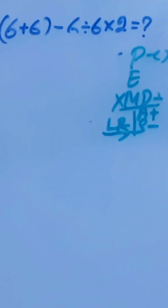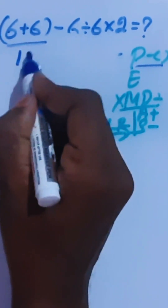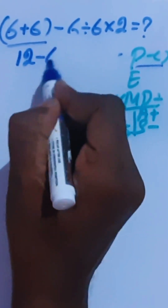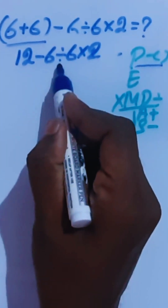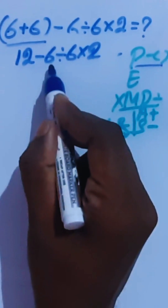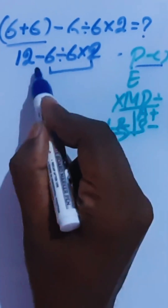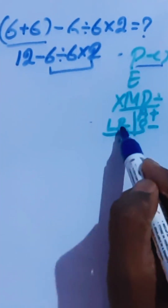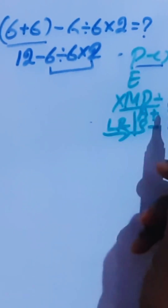As per the order of operation — PANDA's — the bracket is higher priority, so we have to complete this first. So, 6 plus 6 is 12, giving us 12 minus 6 divided by 6 times 2. Here, we have subtraction, division, and multiplication. Division and multiplication are higher priority than subtraction, so we have to do those before the subtraction. We have to follow left to right since both are equal priority.